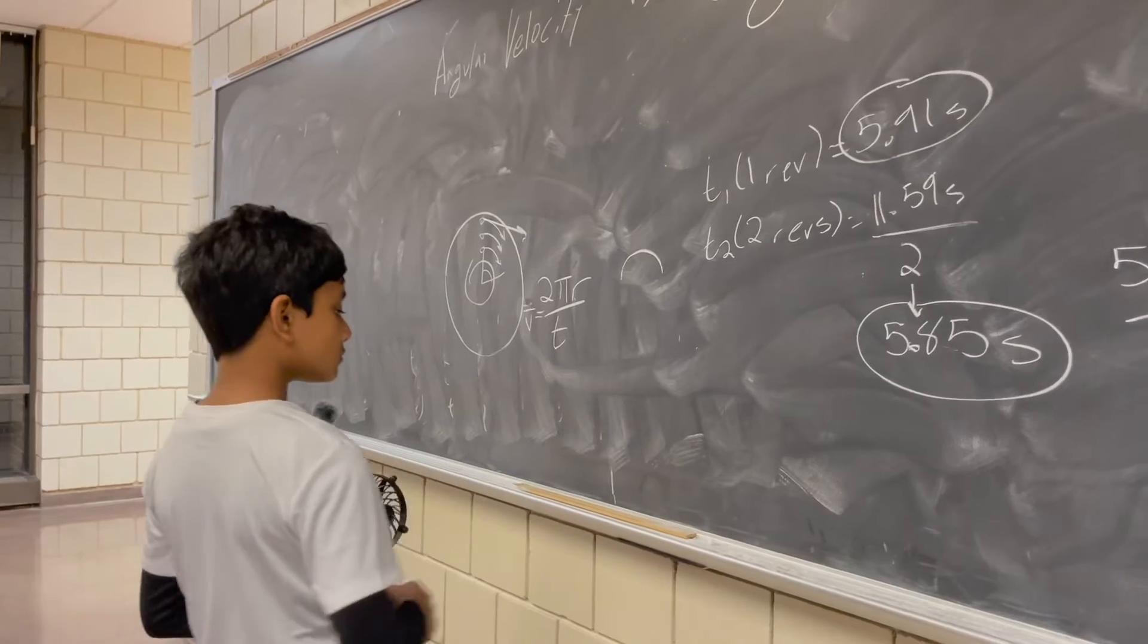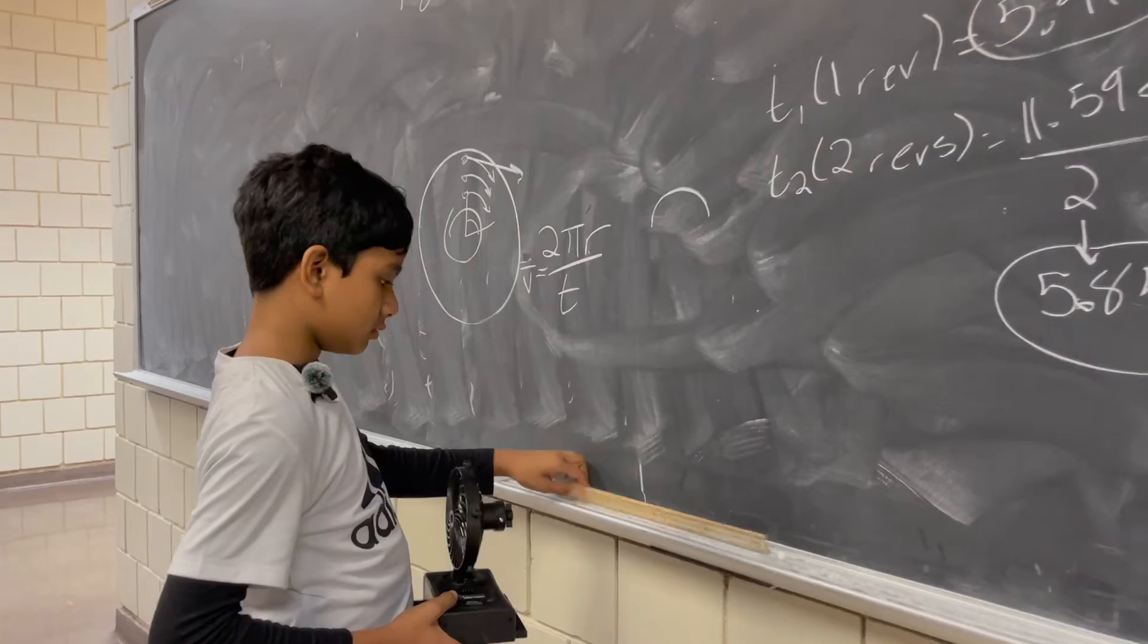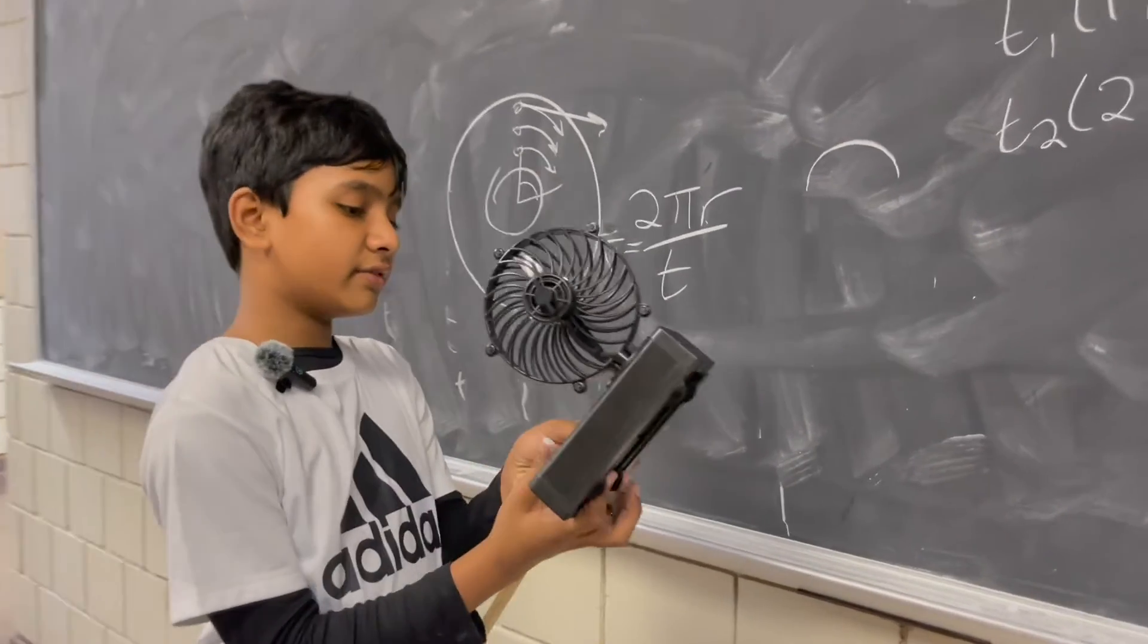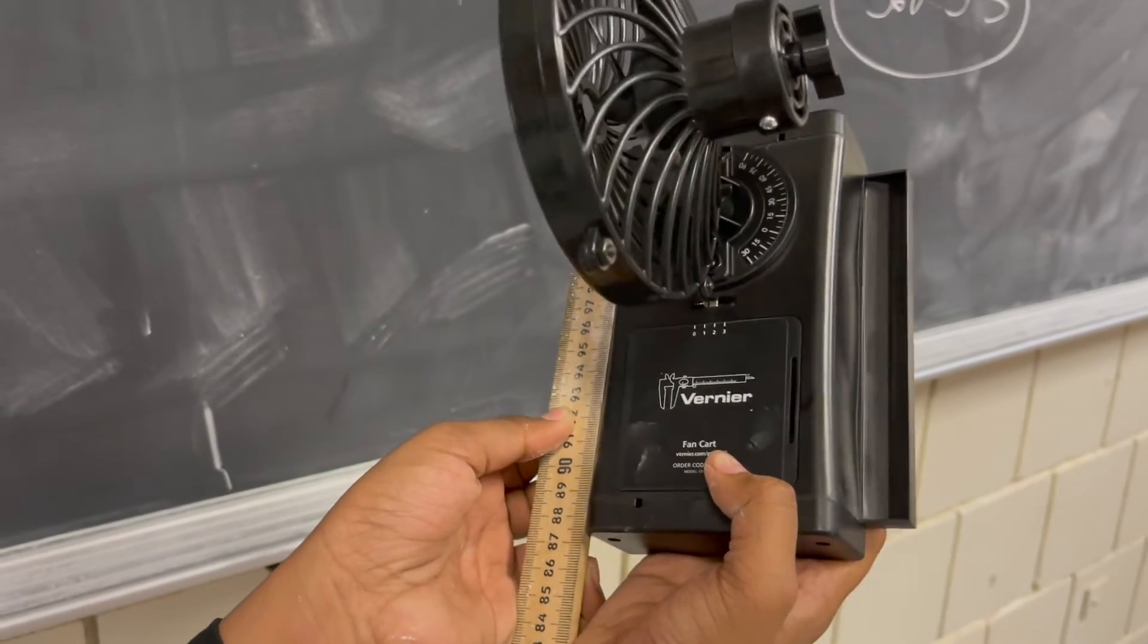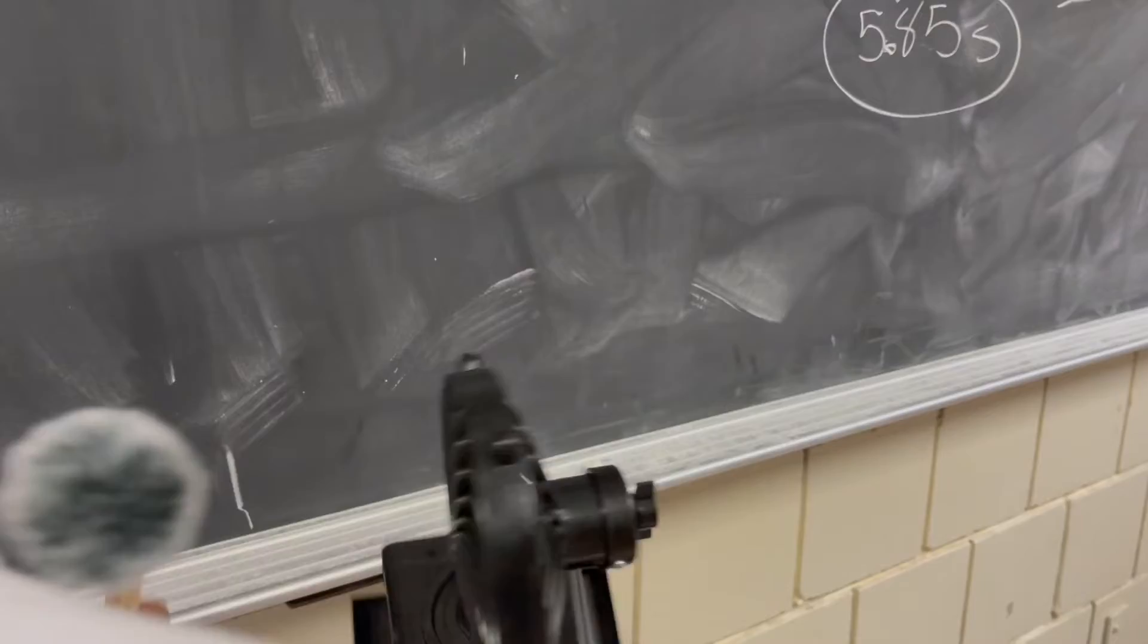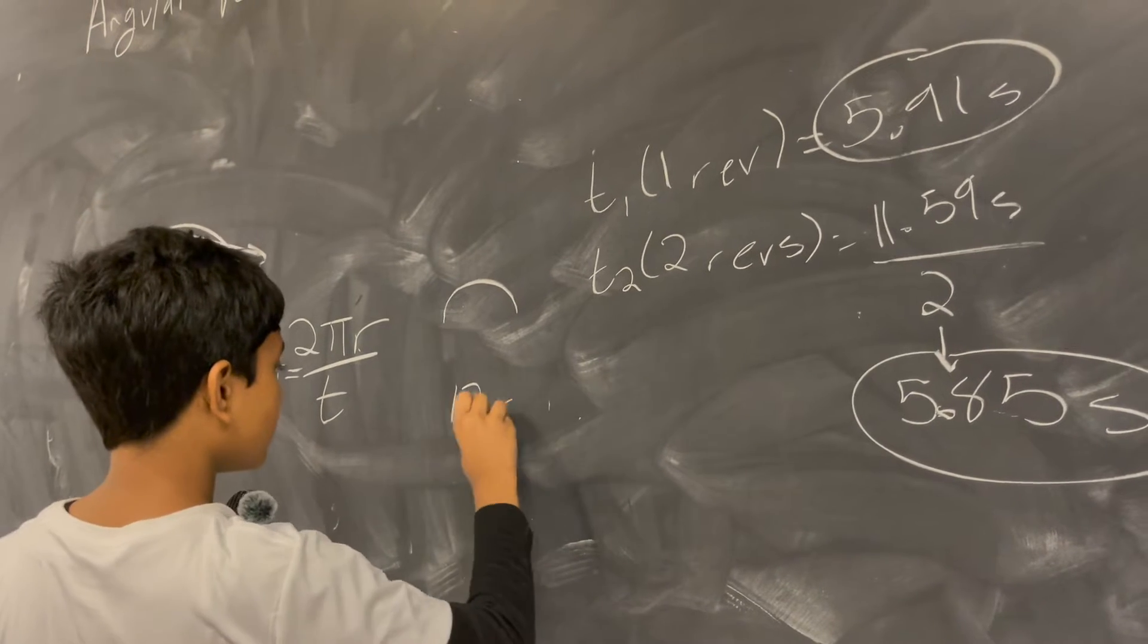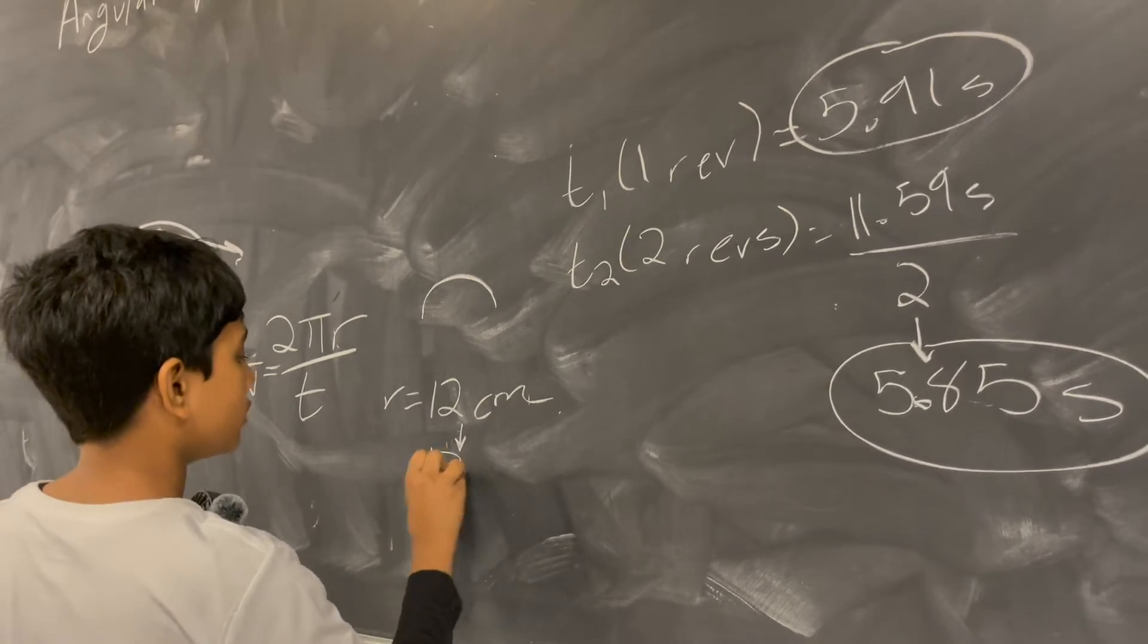Now we're going to measure the radius of the orbit, which looks like we have a meter stick coming just in handy. We have to measure the long side of this, preferably right about here. 88, so about 12 centimeters. So 12 centimeters, which if we convert it to meters is 0.12 meters.